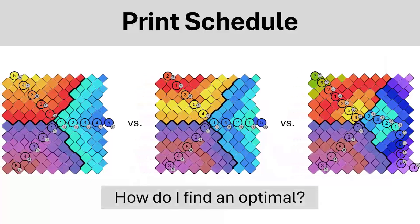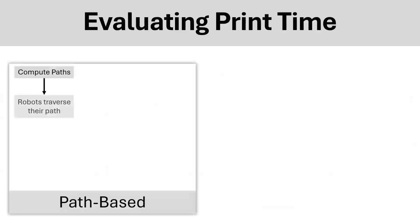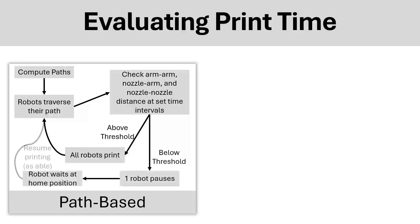We develop two methods for evaluating the time to print. A path-based approach, which relies on computing paths, where robots traverse their path, check their distance, and if it's above a threshold, robots will continue printing, otherwise one of the robots will pause.